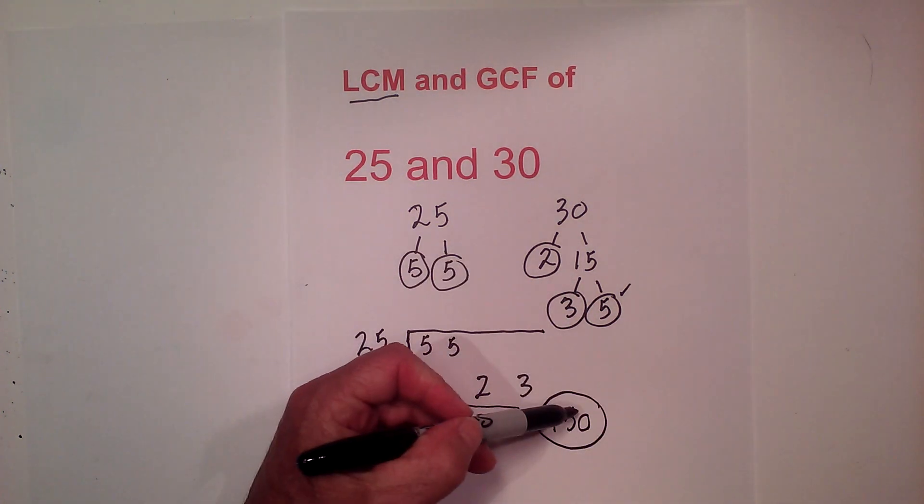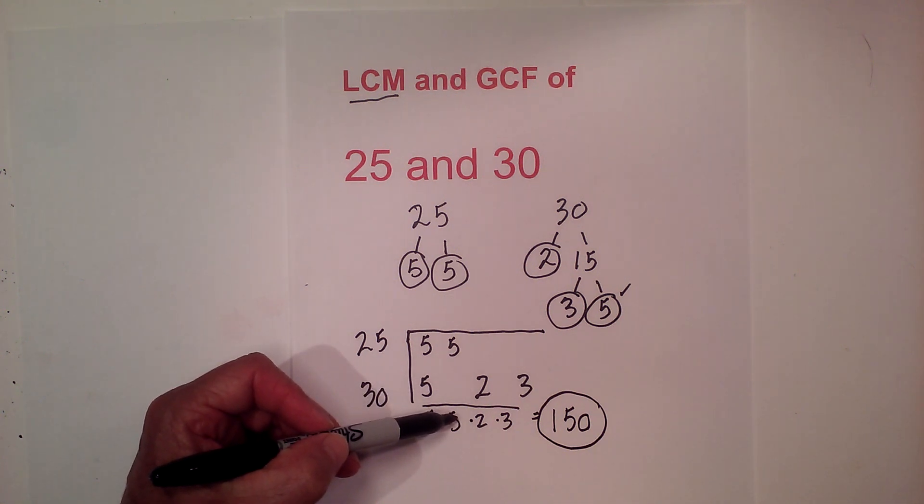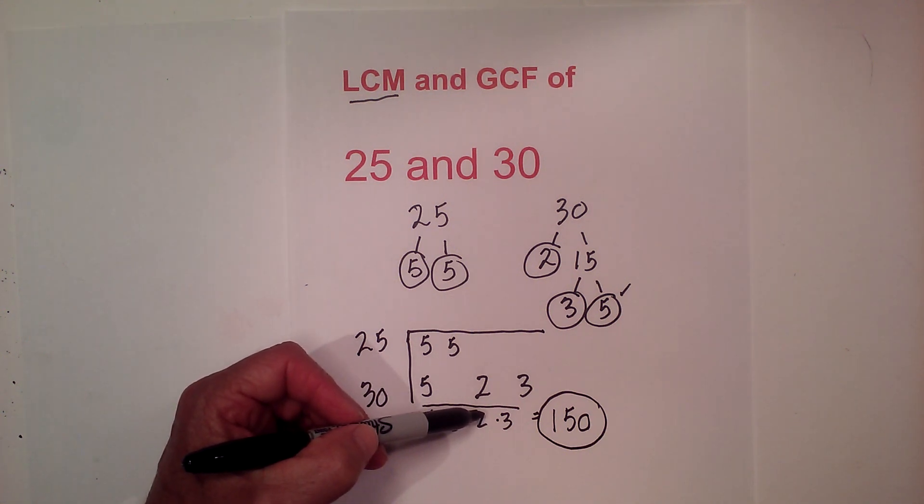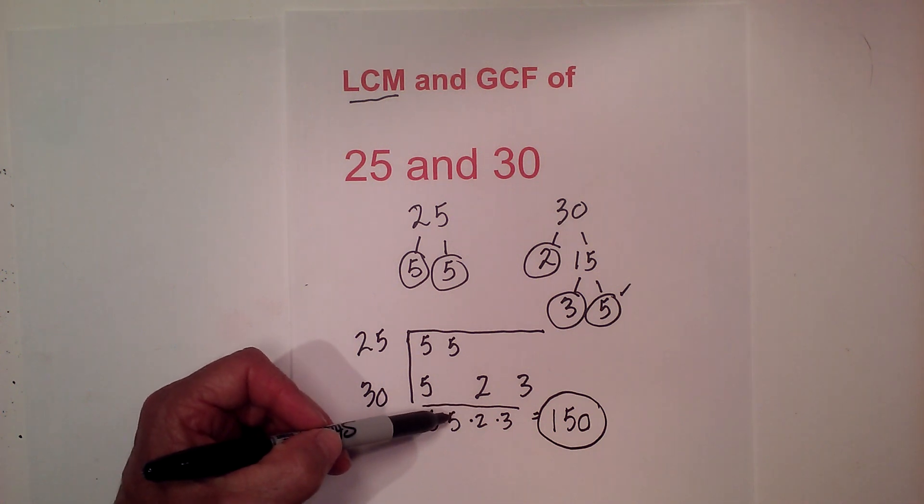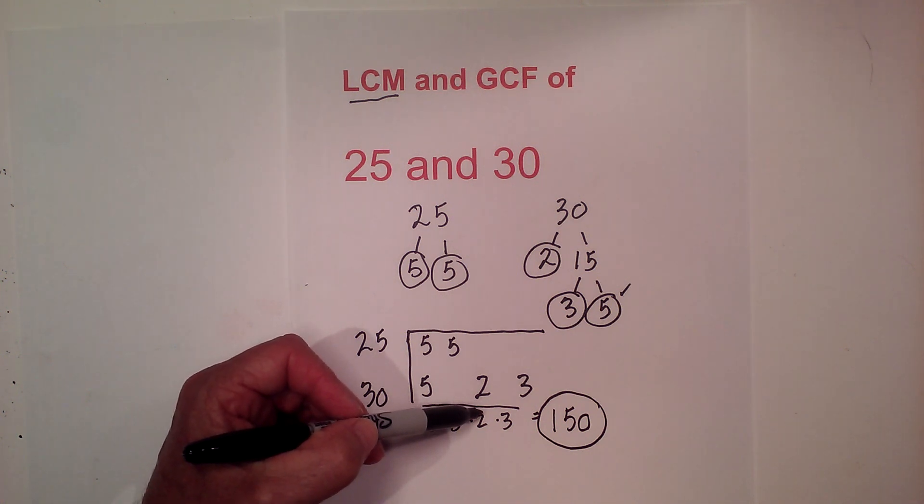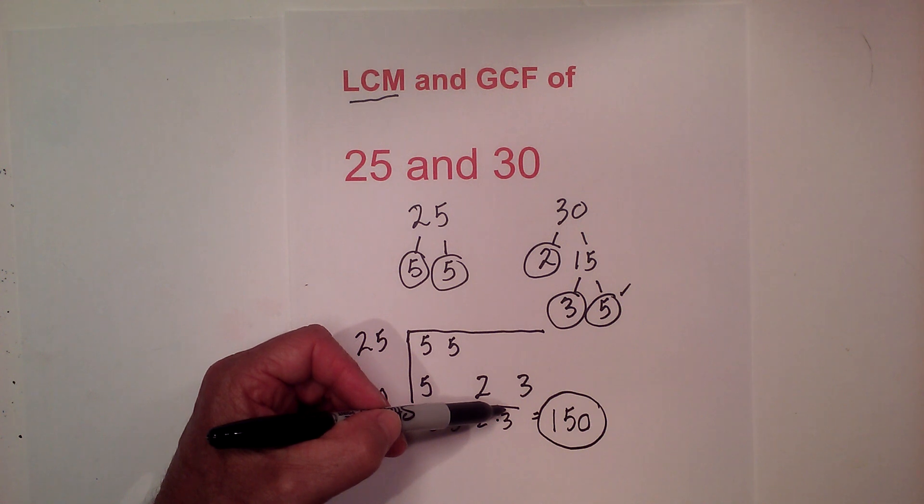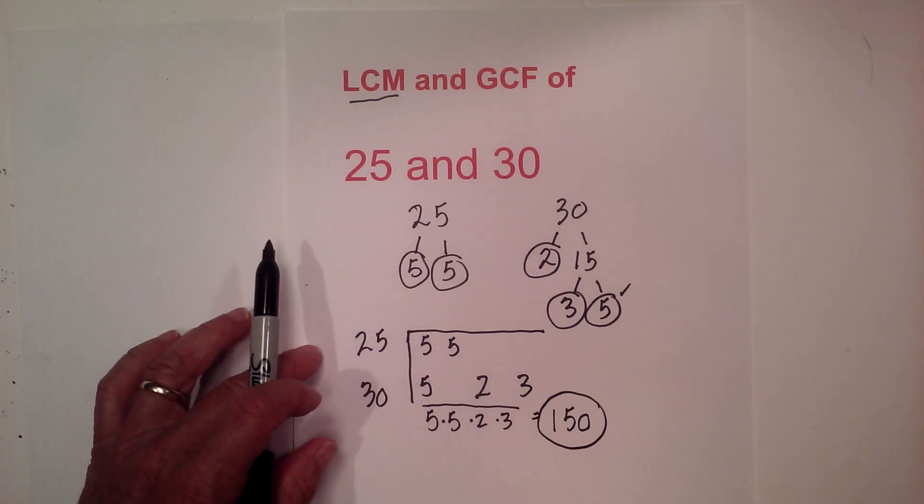So again, I got the 150 from multiplying 5 times 5, which is 25, times 2 is 50, times 3 is 150. That's the LCM.